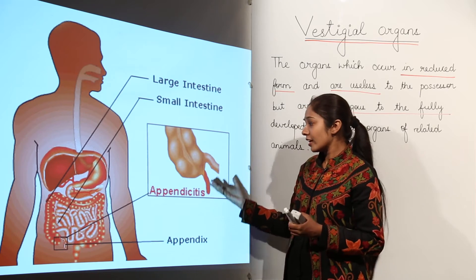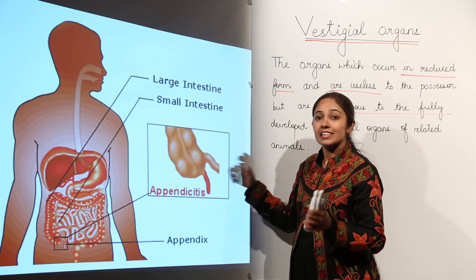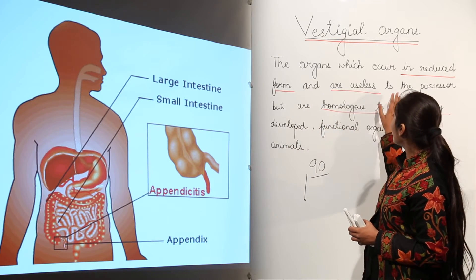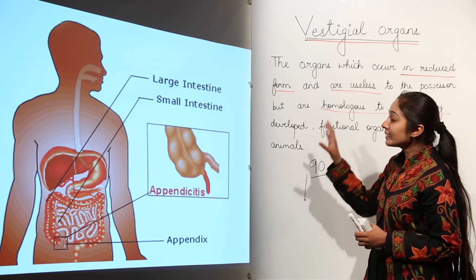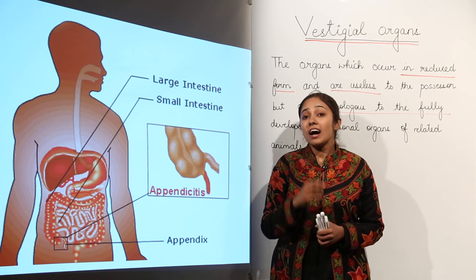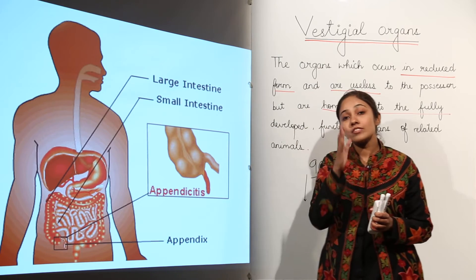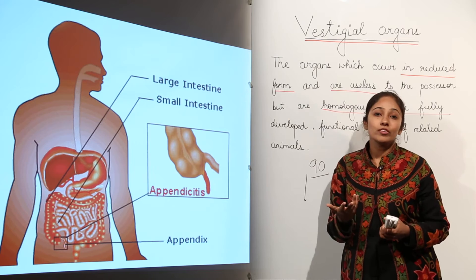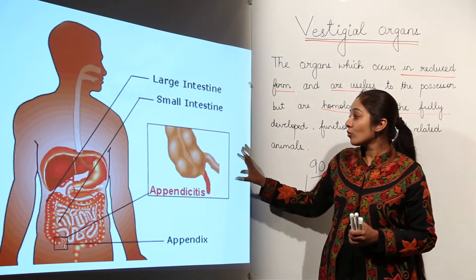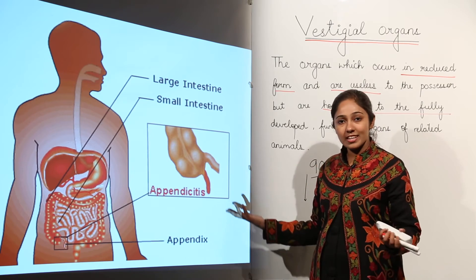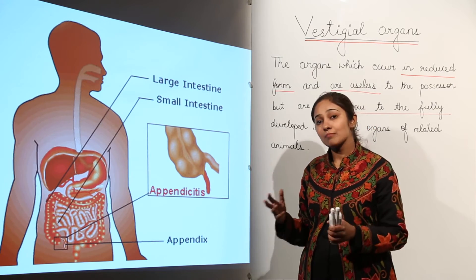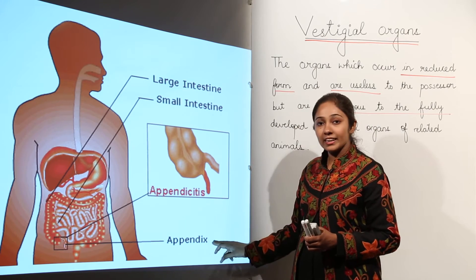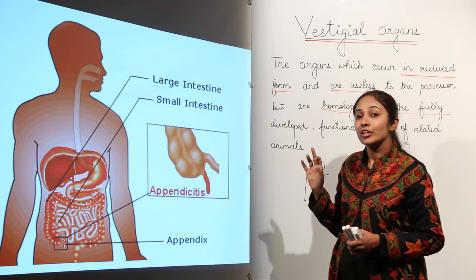Most of you have heard that somebody has a lot of pain and their appendix needs to be removed. The appendix can cause a disease called appendicitis, requiring surgical removal. Since we now eat properly cooked, soft food, we don't need this organ for digestion. The appendix has become useless and functionless, making it a classic example of a vestigial organ in human body.